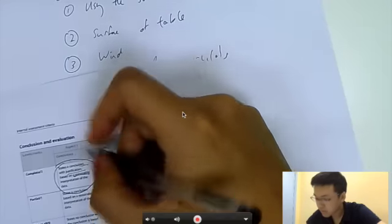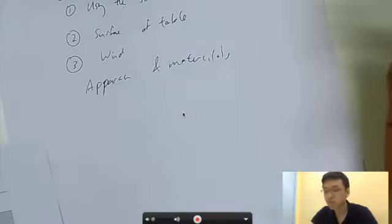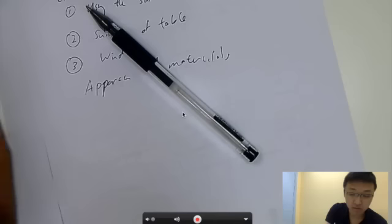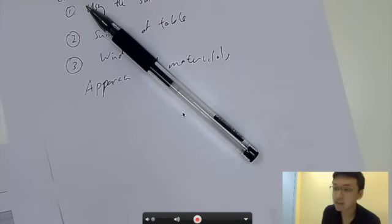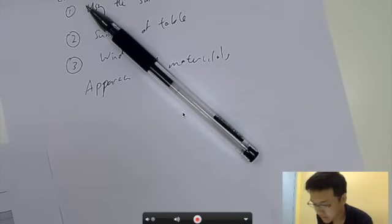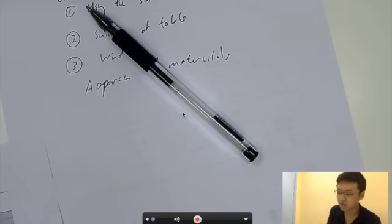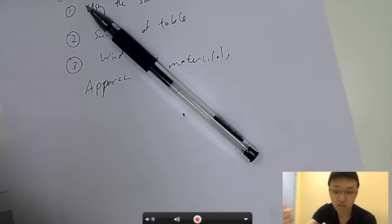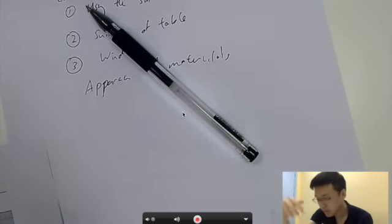The next part is evaluating the procedures — identifying all weaknesses. The first weakness is human error: the stopwatch may be started at a different time than when the ball drops, and due to human movement, the ball may be dropped at a different height than intended. The second weakness is air resistance, which reduces the potential energy — this is a source of systematic error that will cause us to overestimate the bouncing time across all trials.